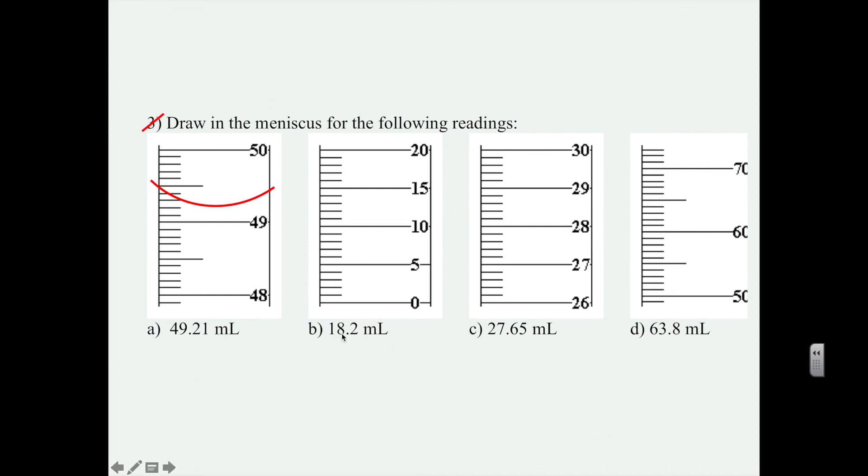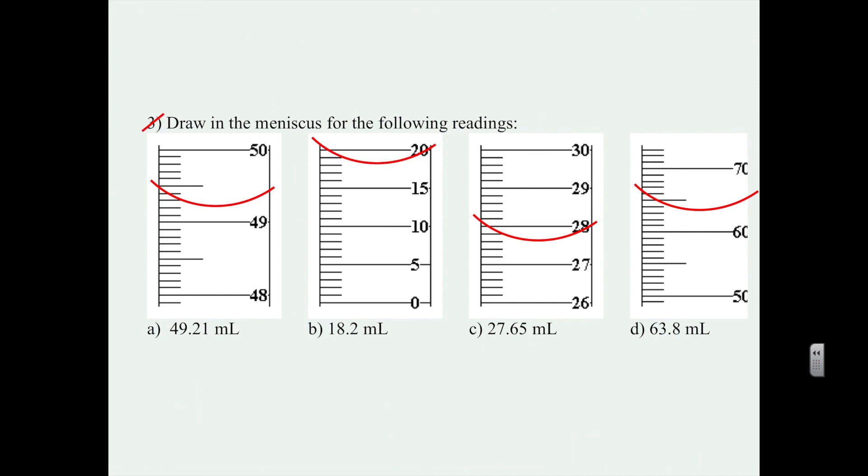So now with 18.2, you might read it about here. Remember that you're reading from the bottom of the meniscus or this bottom curve. And then this one is 27.65, and then this one is 63.8. I hope those are correct. I've been known to be wildly wrong a couple of times on some of these. So point it out if you notice a mistake.